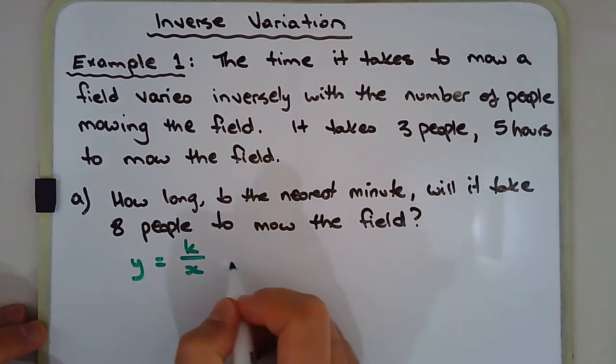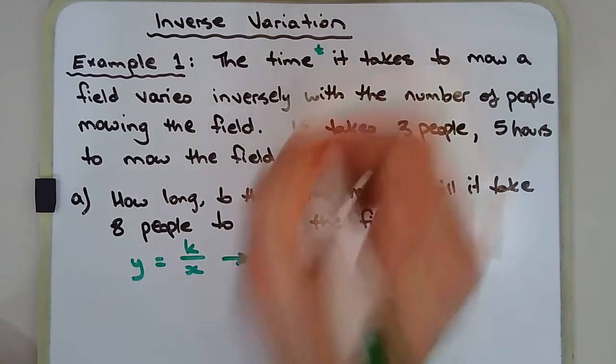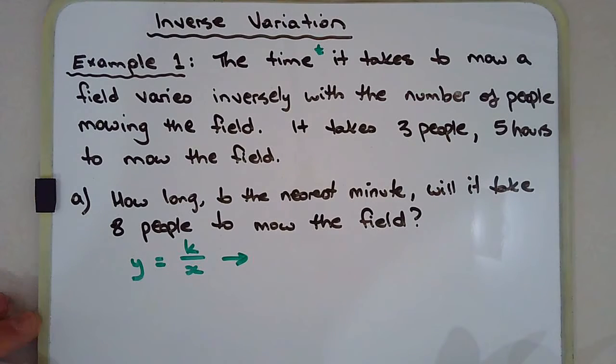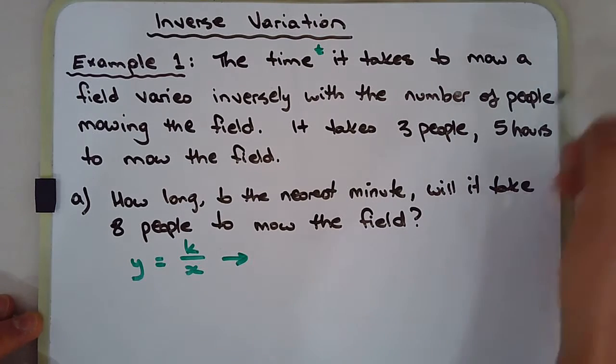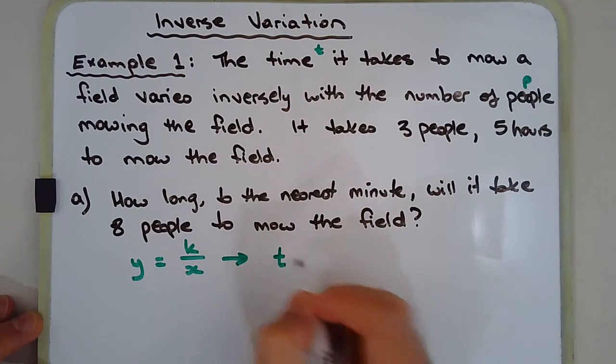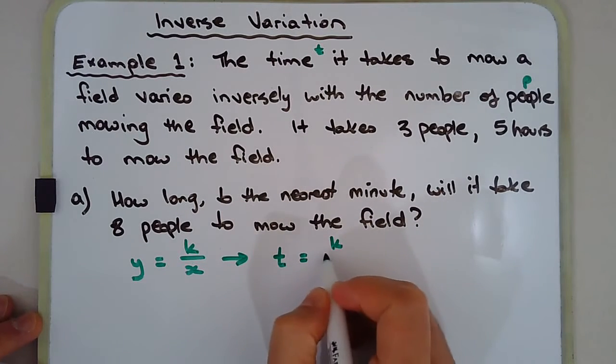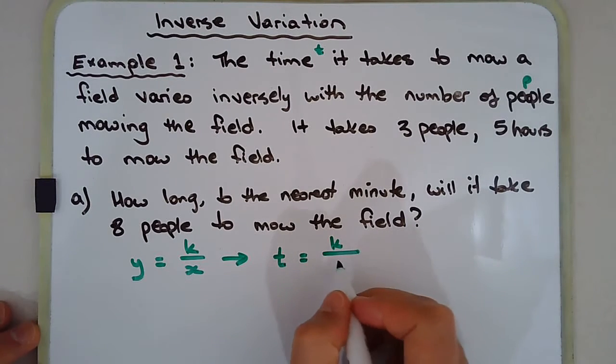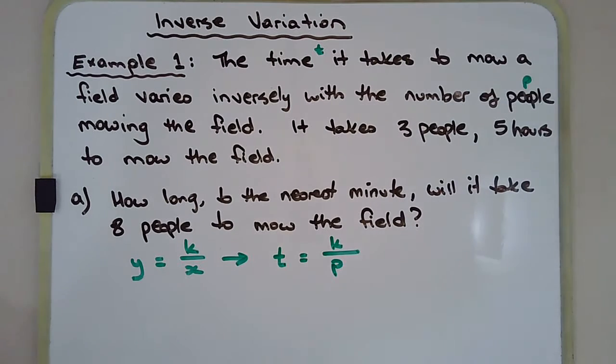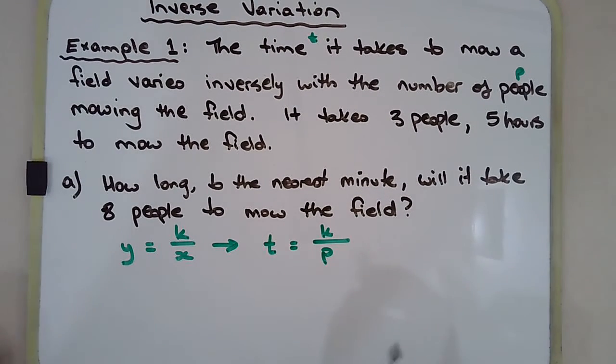So what we'll do is let's choose some appropriate pronumerals. So for time, why don't we use T. And the number of people, let's use P. So time depends on the number of people. So time is equal to this constant K, the constant of variation or the constant of proportionality over the number of people. So that's P. So I guess the first step, we need to find the value of K, this constant.